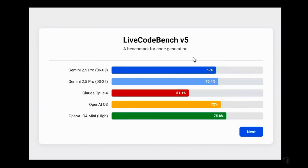Talking about LiveCodeBench Version 5: this is an amalgamation of LeetCode and Codeforces questions — competitive coding questions, very analogous to back-end or server-side coding. The older Gemini 2.5 Pro scored 70.4%, but the newer version is actually 1.4 percentage points down at 69%, so there's a slight regression for back-end coding. The best model here is OpenAI o4 Mini High at 75.8%, followed by o3 at 72%.